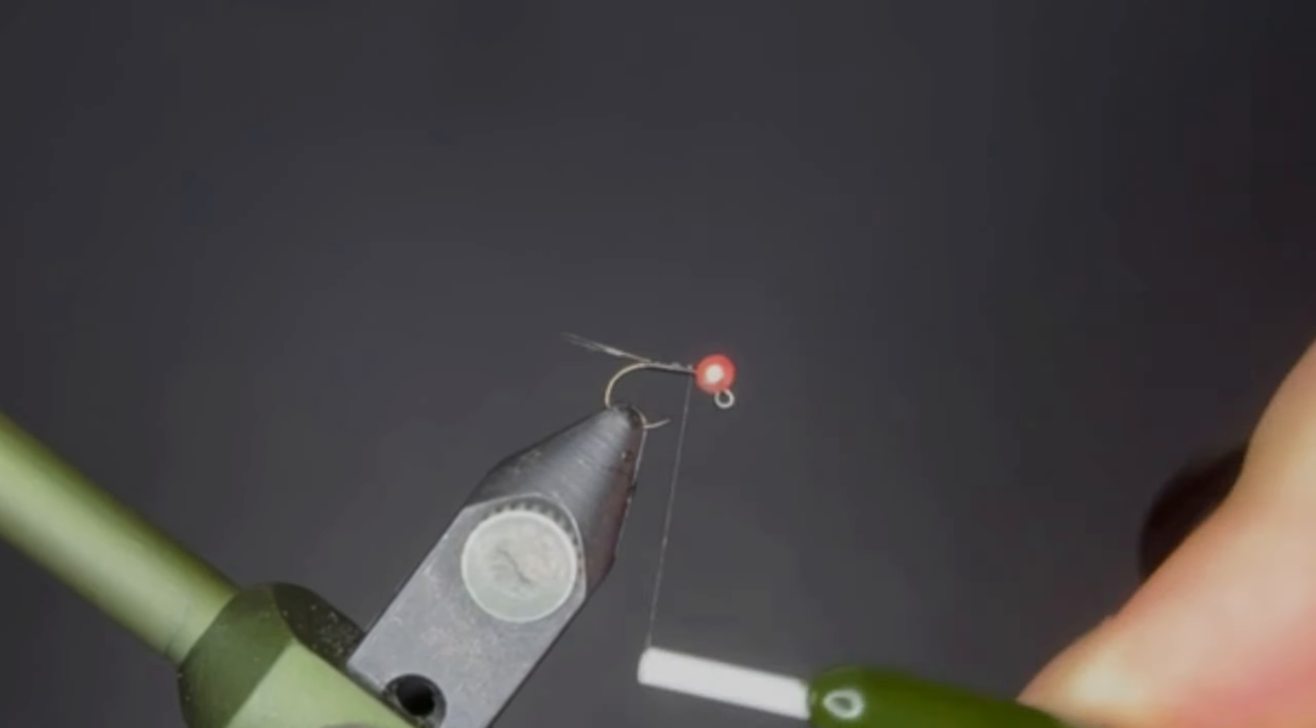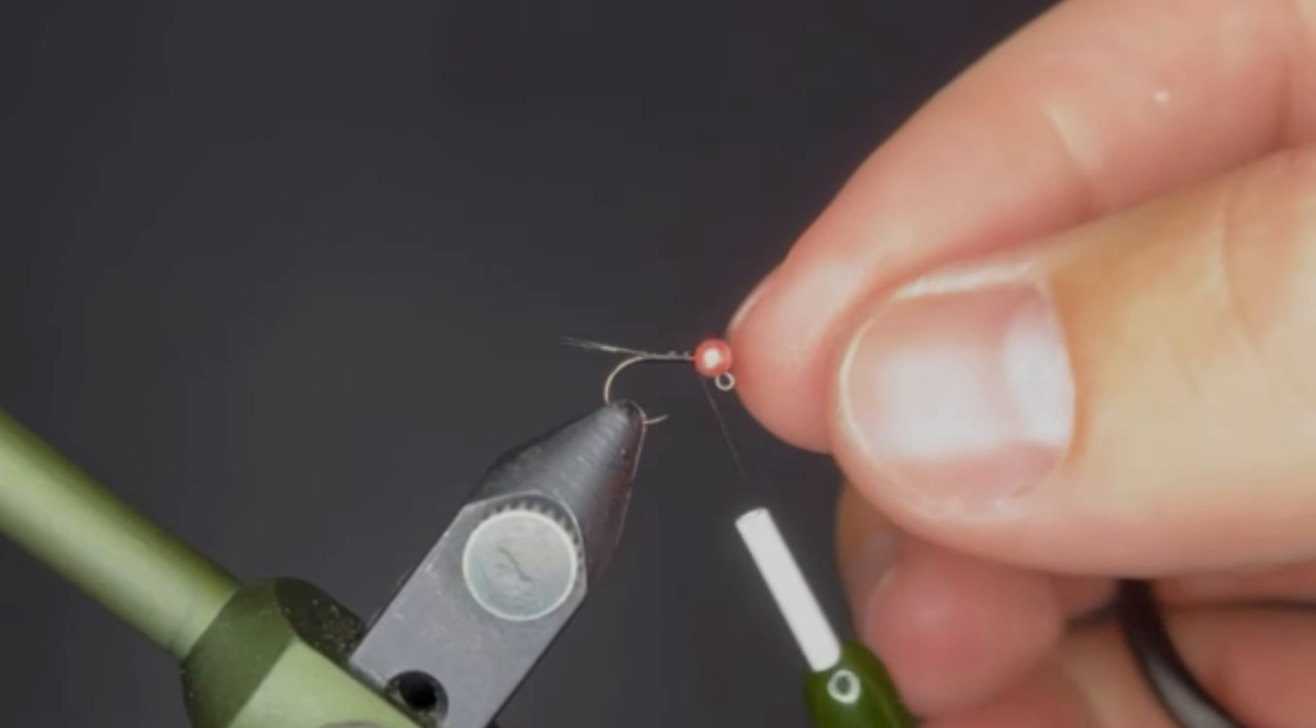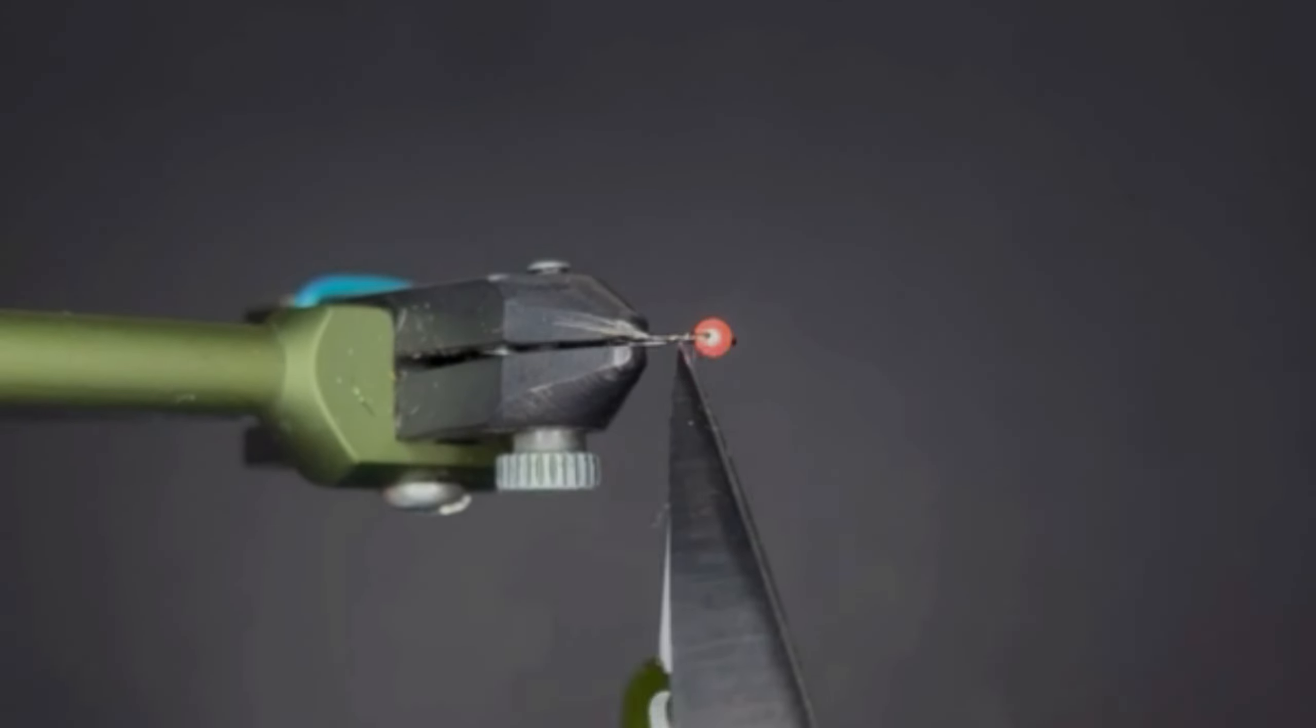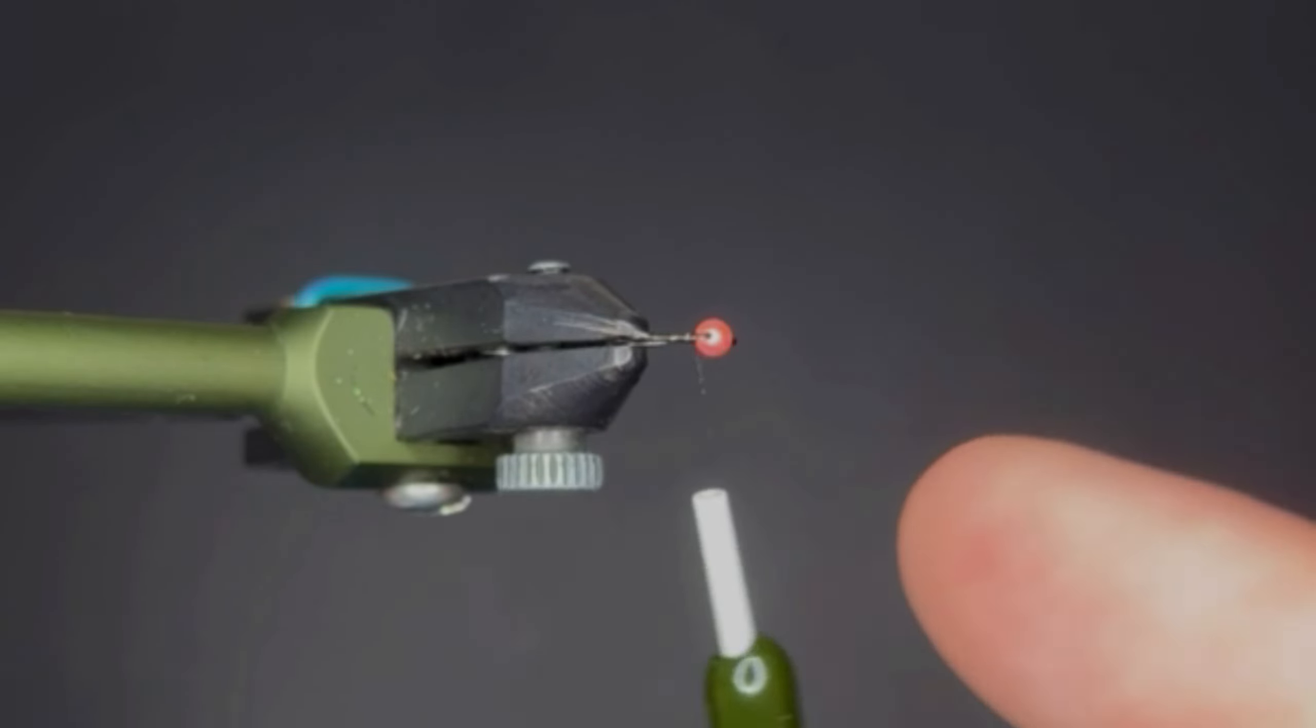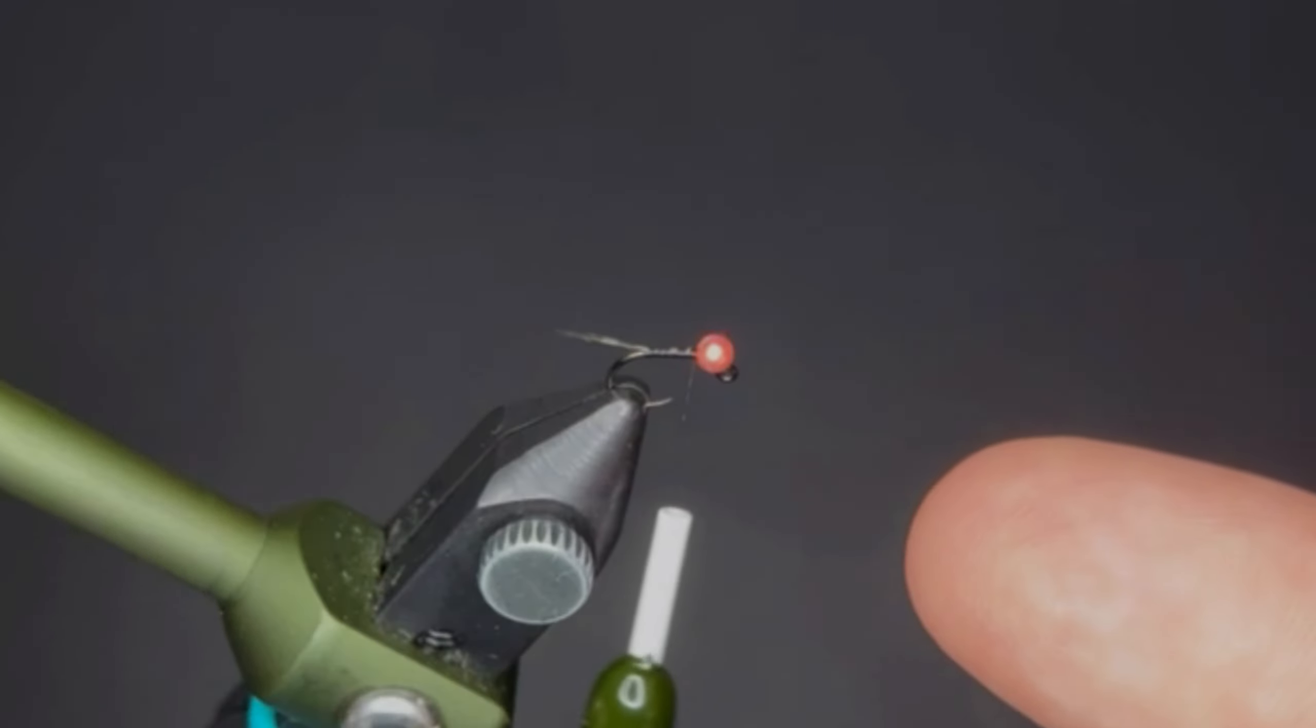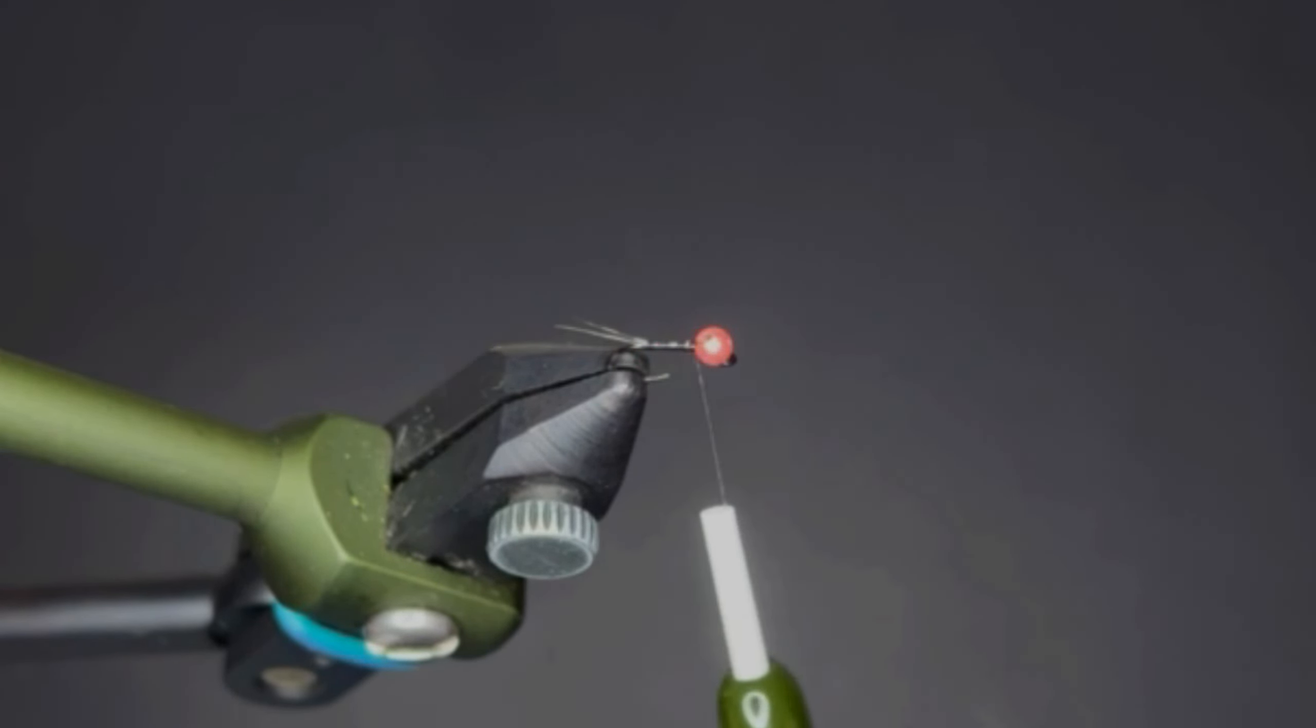Bringing our thread forward to right behind the bead. One thing I really love about these Saluda beads is the hole for the slot is so much smaller, so it takes very little thread wraps to lock that bead down. Some other slotted tungsten beads have such a wide opening you have to use a whole spool of thread.